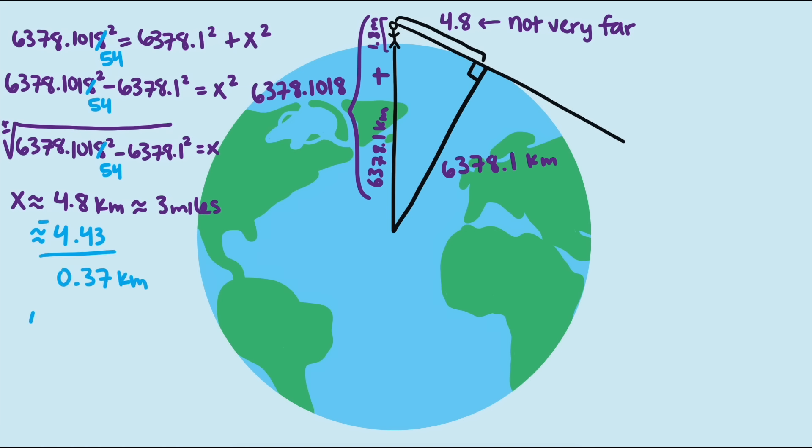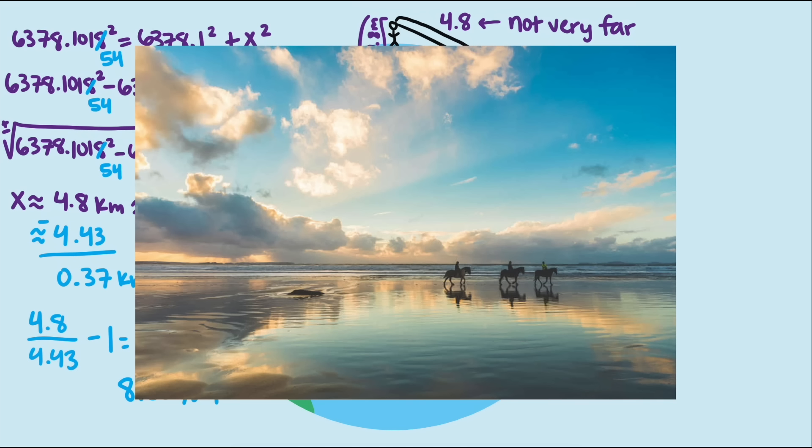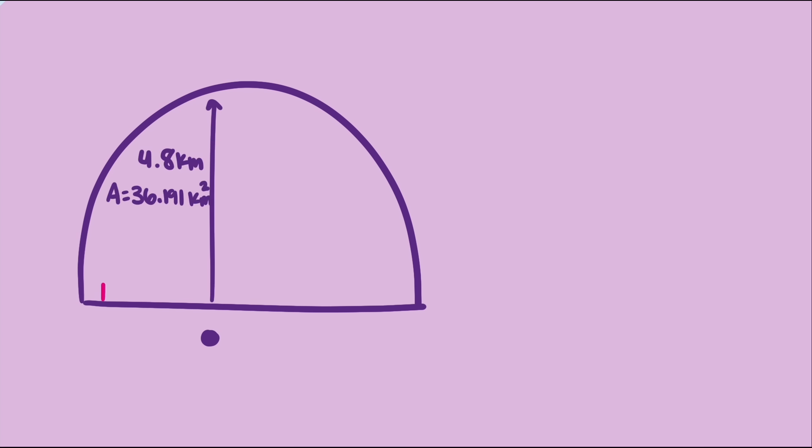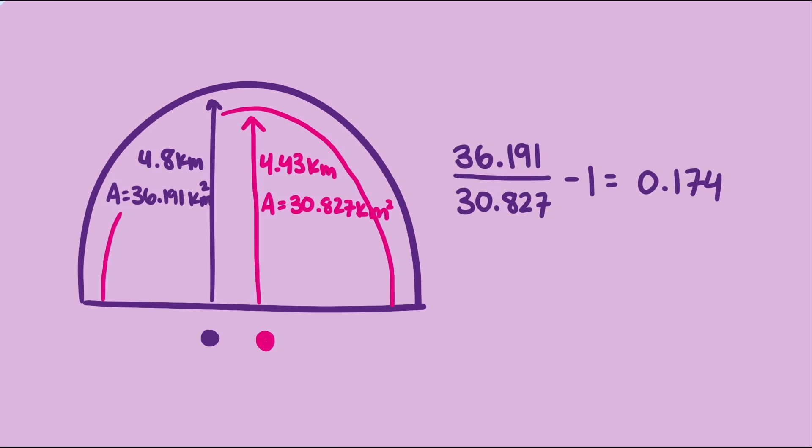It is a good thing I hadn't done the math before our vacation. I don't think it would have gone over well to tell my wife I had an 8.35% better view of the ocean than she does. Well, it's actually higher than that. We're basically looking at a semicircle of the ocean, and the area of the ocean I can see is 17.4% larger than the area she can see.